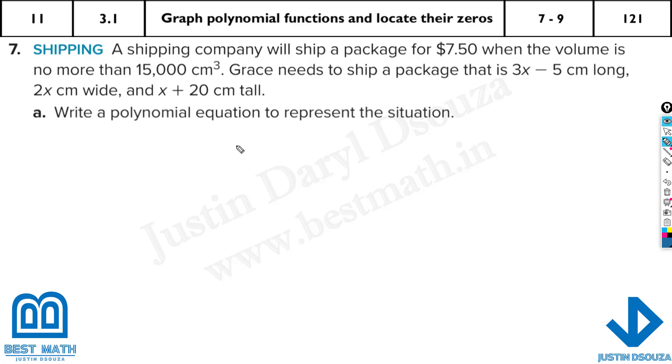So they have given us the length, width, and height. What is volume exactly? Volume is given by length times width times height. We will substitute what is known. We don't have the values, we have them in terms of binomials: 3x - 5, 2x, and x + 20. That is equal to 15,000 because that is the maximum volume.